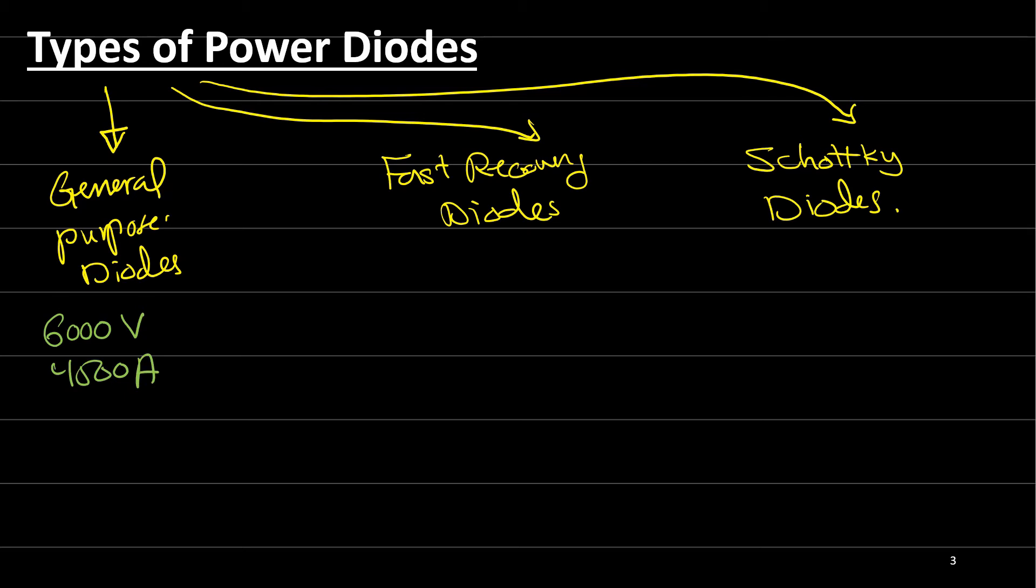For the fast recovery diode, you'll find that this diode can also be operating up to a few 6,000 volts. But the current rating will be within the 1,000 amperes range. But the difference between the fast recovery diode and the general purpose diode: the recovery time for the fast recovery diode is much smaller than the recovery time of the general purpose diode. You'll find that the recovery time can be ranged from 0.1 microsecond to 5 microsecond. When we talk about recovery time 5 microseconds, the 5 microseconds means in hertz how much?